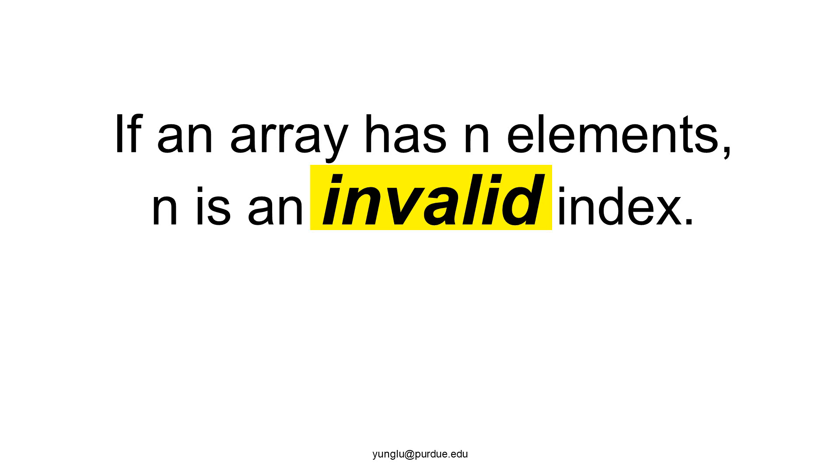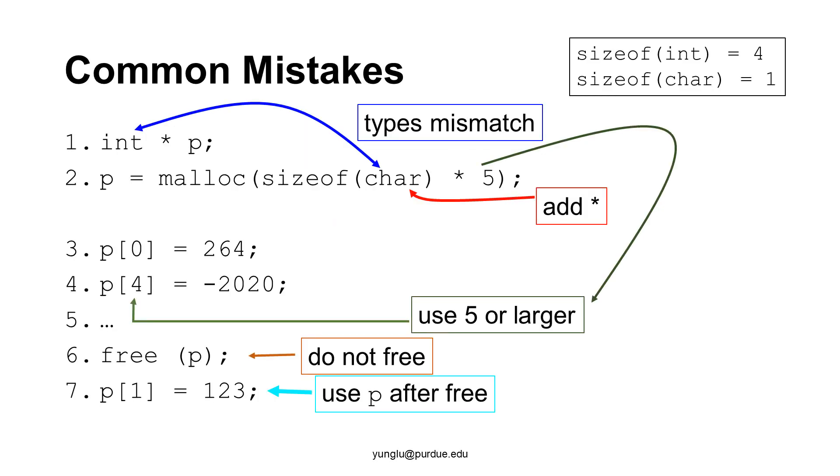Let's see some common mistakes when using heap memory. The first common mistake is type mismatch. If p is an integer pointer, inside malloc, we should use sizeof int. It must be int, not any other type. The reason is that different types have different sizes. Also, we must not add asterisk inside sizeof. p is an integer pointer. That means the address pointed by p is an integer. We have already said many times, if the array has 5 elements, 5 is an invalid index.